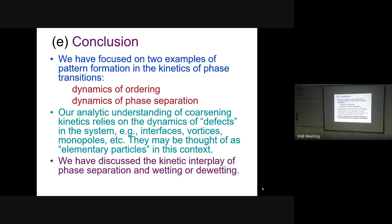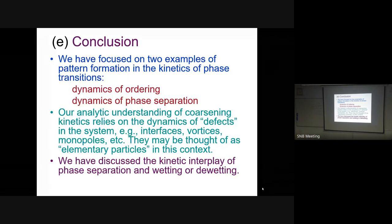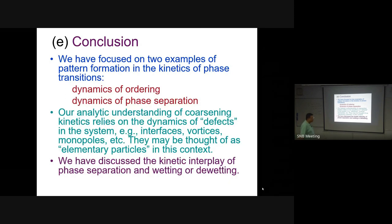For example, in ordering in a random-field or random-bond Ising model, the growth law changes from power law in the pure case to logarithmic. The reason: moving interfaces get trapped by local disorder minima, and hopping over these minima is thermally activated. The barrier scales as a power law in the domain size - estimated in the 1980s using a Flory-type argument - leading to logarithmic growth. This crossover from power-law to logarithmic growth is one of the active areas in the field.